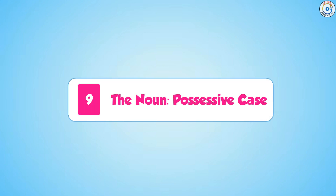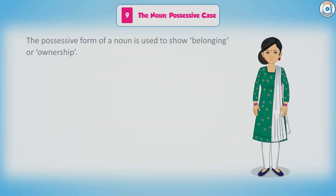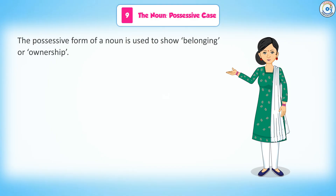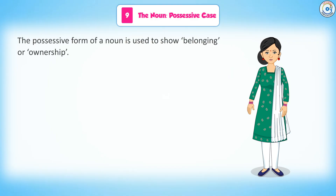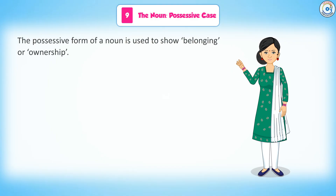Chapter 9: The Noun Possessive Case. The possessive form of a noun is used to show belonging or ownership.